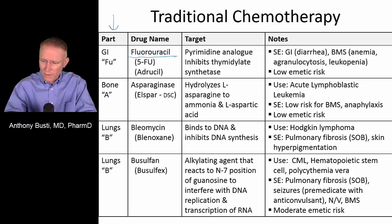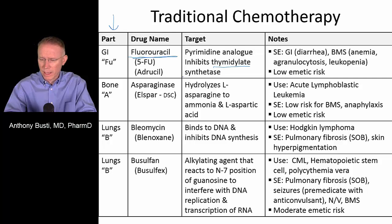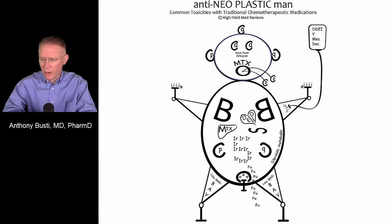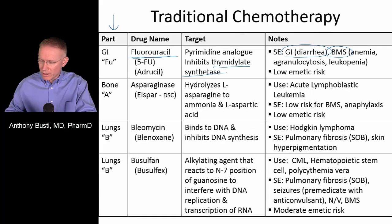The first drug in this group is fluorouracil, also known as 5-FU. This drug is a pyrimidine analog — pyrimidine being one of the nucleotides that make up DNA — and it inhibits thymidylate synthetase, the enzyme it targets, so it impacts DNA and cellular replication. One of the dose-limiting toxicities is diarrhea; it can also cause significant bone marrow suppression. On antineoplastic man, you'll see 5-FU in the GI tract to correspond to the abdomen and intestines and to show that the figure is having diarrhea.